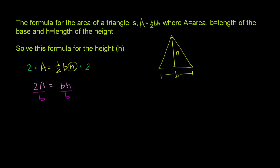And then what do we get? Well, the right-hand side, the b's cancel out, and the left-hand side, we're just left with 2A over b. So we get h—and I'm just swapping the sides here—h is equal to 2A over b. 2A over b. And we're done. We have solved this formula for the height.